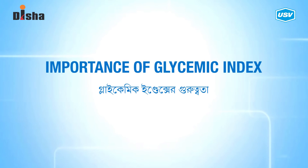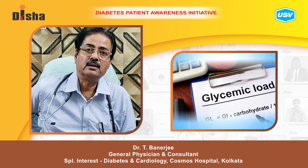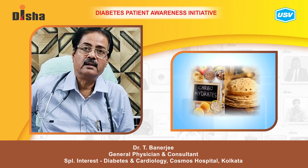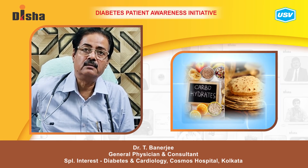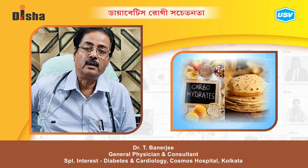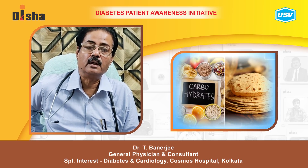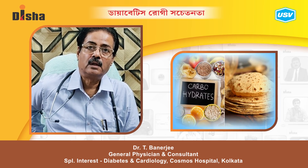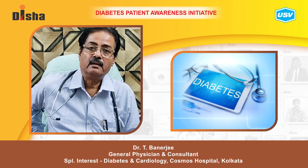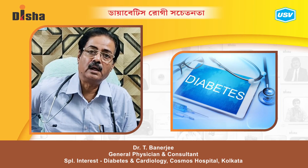What is the problem with the glycemic index? The problem with the glycemic index is that when we eat carbohydrates, we can see the sugar levels rise rapidly. Some carbohydrates increase the sugar level more than others, and some increase sugar levels for much longer.